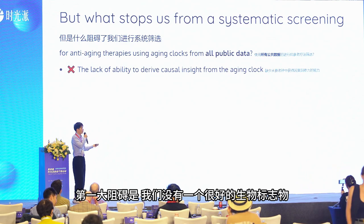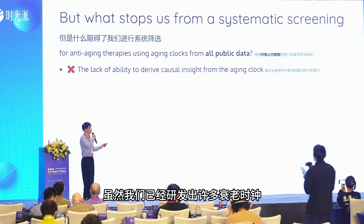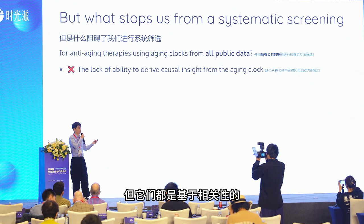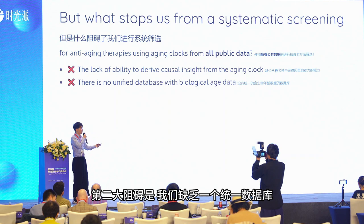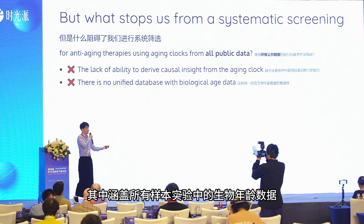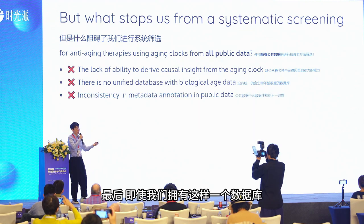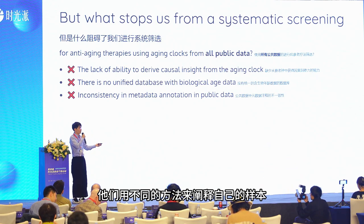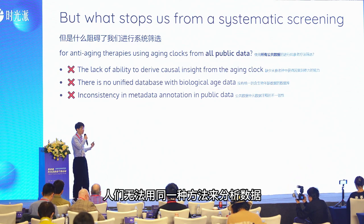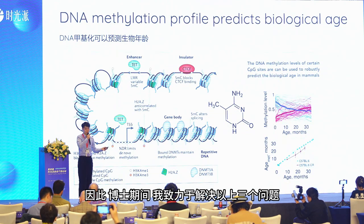What's the barrier? There are mainly three barriers. First, we don't have the biomarker. We have a lot of aging clocks recently, but they are all correlation-based, and we really need causal data. Second, we don't have a unified database for all the samples and experiments with biological age data available. And lastly, even if we had this database, different labs and experiments use different ways to annotate their samples — it's just chaos, with no way to analyze it in one path.